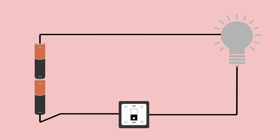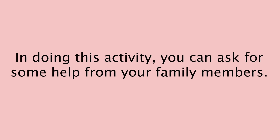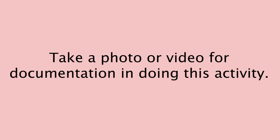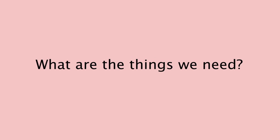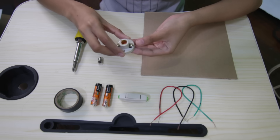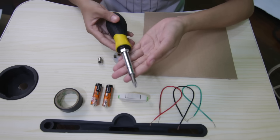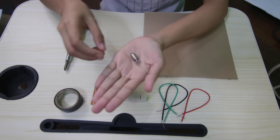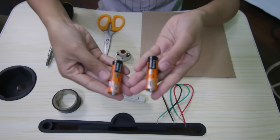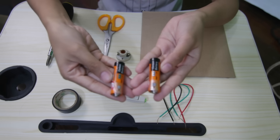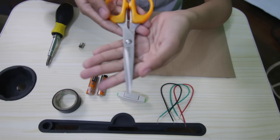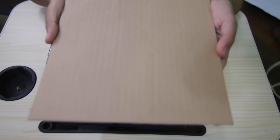Now, let's make a complete circuit. In doing this activity, you can ask for some help from your family members. You may also take a photo or video for documentation. What are the things that we need? We need a bulb socket — small size for a flashlight bulb — a screwdriver, three copper wires, a flashlight bulb, two dry cells the size of AA batteries, a switch, scissors, electrical tape, and cardboard.